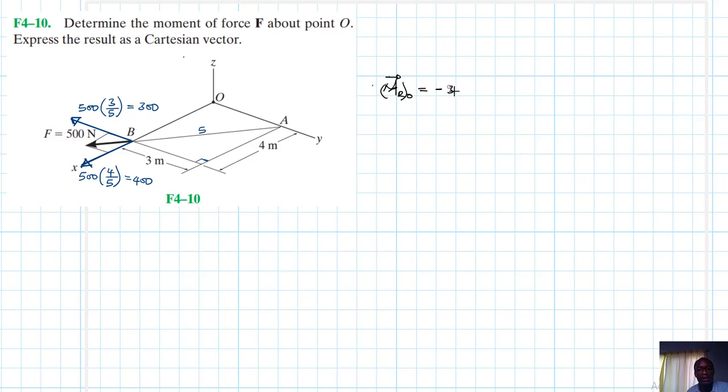This becomes minus 300 times the lever arm which is 4. This distance here is 4, then in the kth direction.